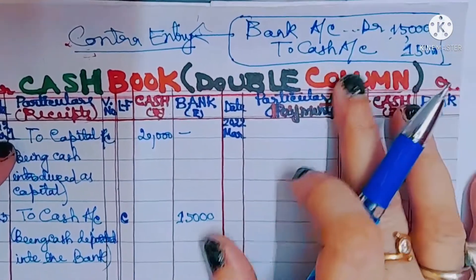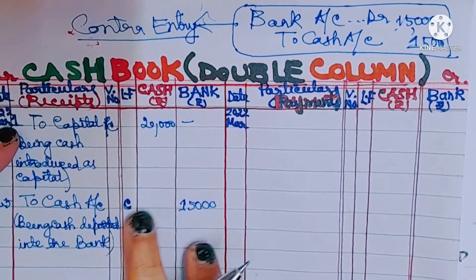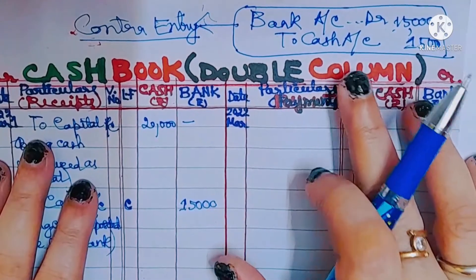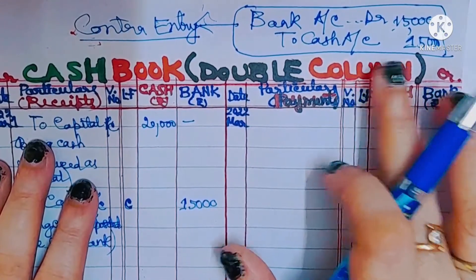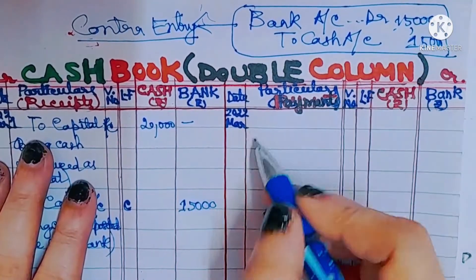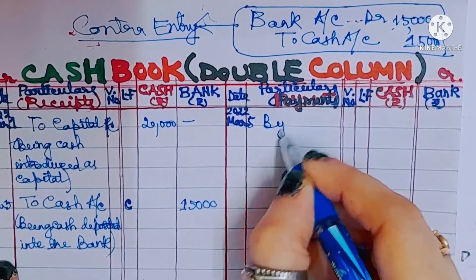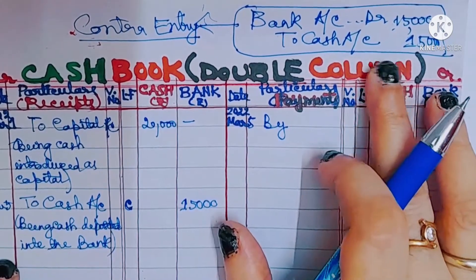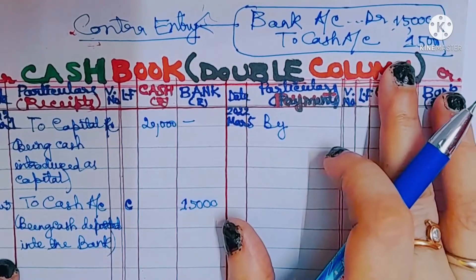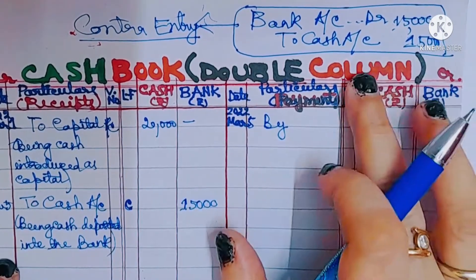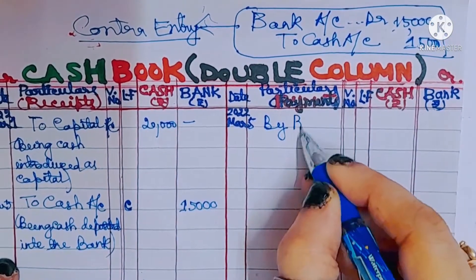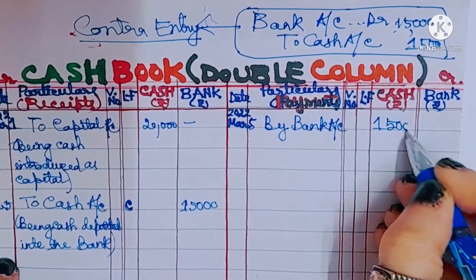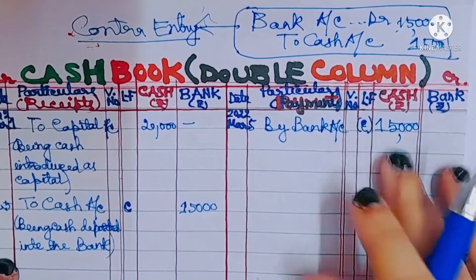Since bank account is on the debit side and cash account is on the credit side, we write 'By Bank Account' in the cash book on the credit side in the cash column — 15,000. We also write C in the ledger folio column. C stands for contra.